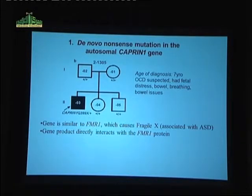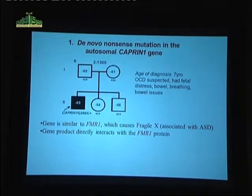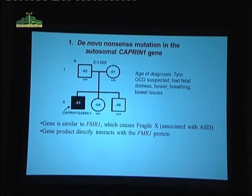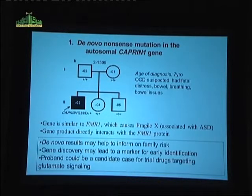The Caprin1 gene encodes a protein very similar to the Fragile X mental retardation protein. You see autism in 40% of Fragile X cases. This gene is associated with autism — the gene product directly interacts with FMR1, it's been involved in intellectual disability, so it's an excellent candidate gene. In this instance, the de novo result may help to inform on family risk.